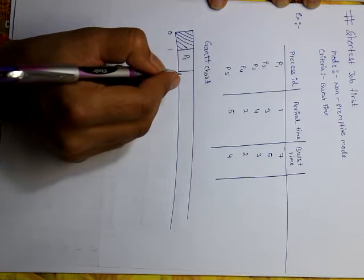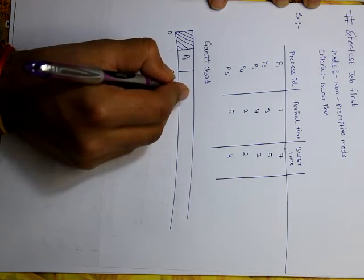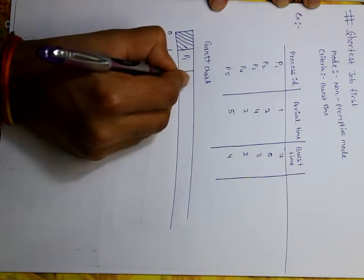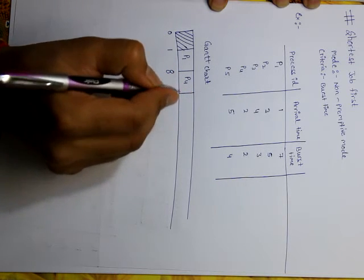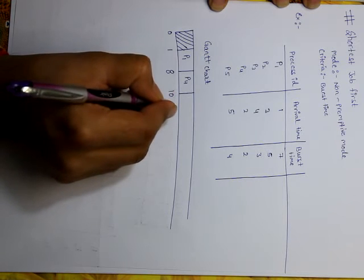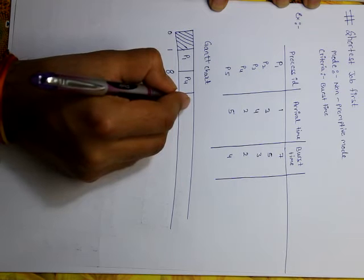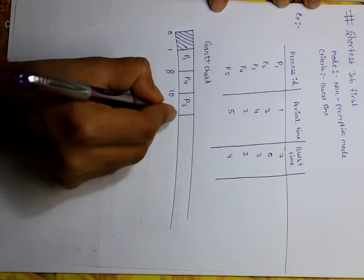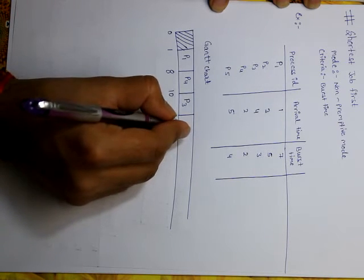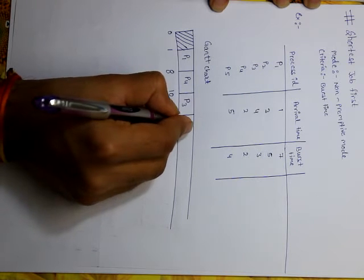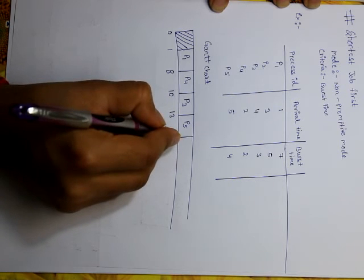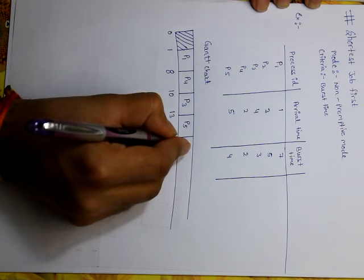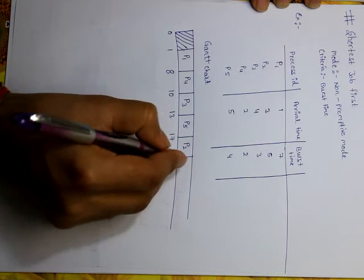Now, as we are applying SJF, we search for the shortest burst time process. Process P4 has the shortest burst time of 2, so we schedule P4 next, and it will complete at time 10. The next smallest burst time is 3, so we schedule P3, and it will complete at time 13. Next, P5 has burst time 4, so we schedule P5 and it will complete at time 17. Last, P2 has burst time 5 and will complete at time 22.